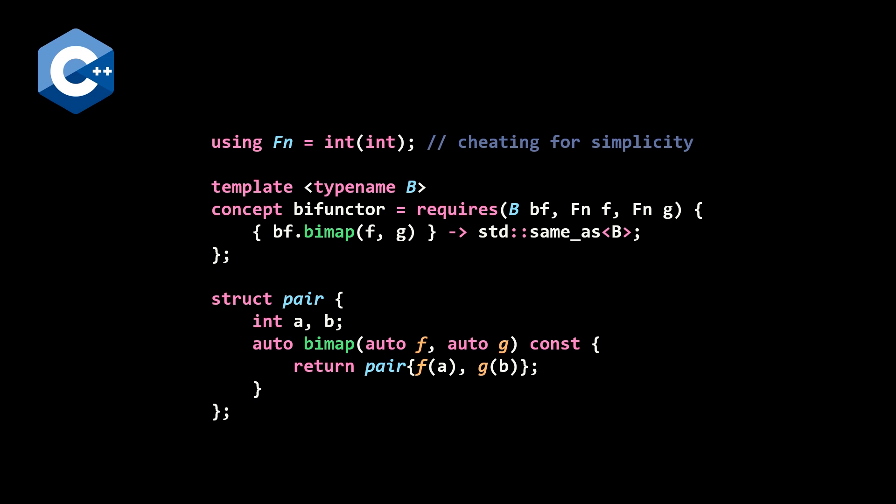But here we're using C++ 20 concepts, where we have a concept bifunctor that requires for bf, it implements a bimap function, which takes f and g, which are going to be two unary functions from int to int. But like I said, you could do this more generically from any type to any type, and it has to return a bifunctor as well. And that's constrained by the type name b that's passed in the templates here.